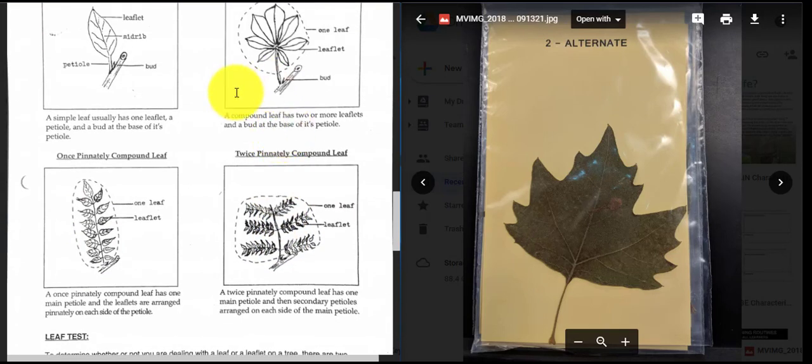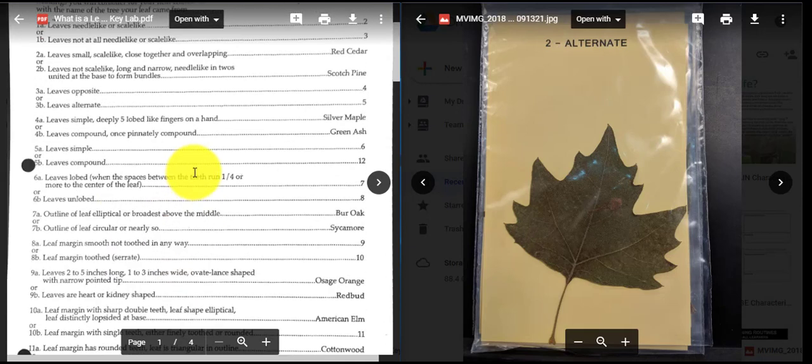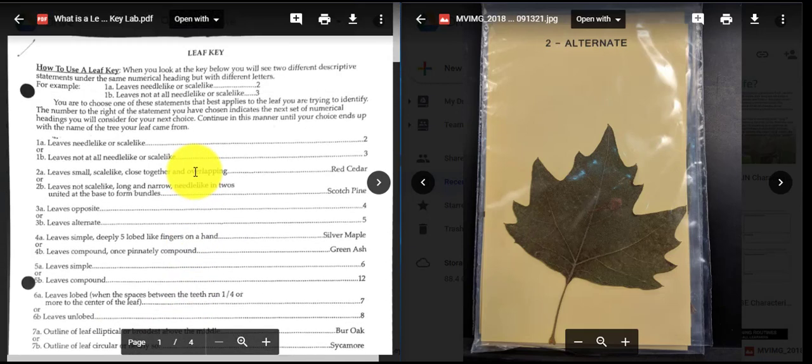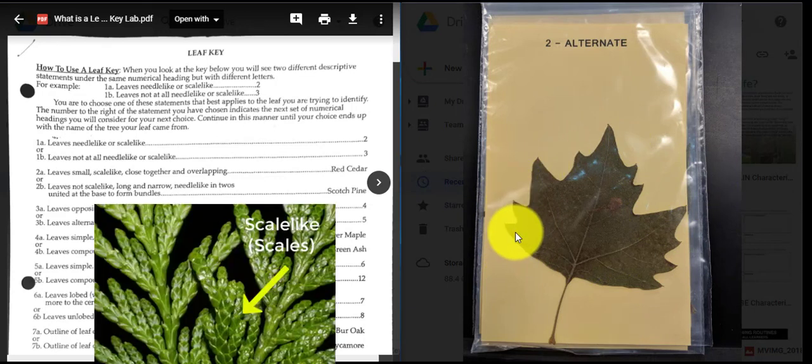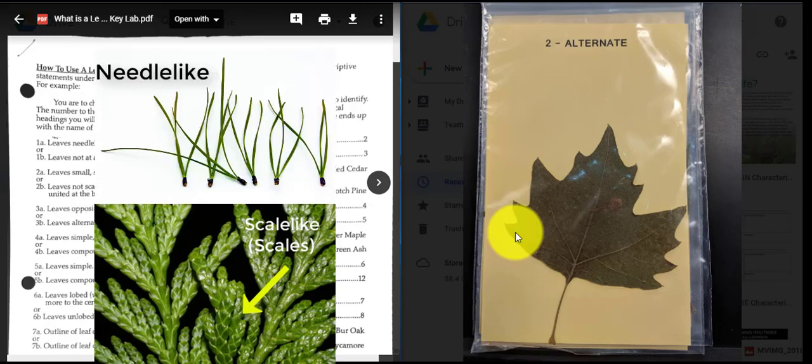All right, so those are important characteristics to remember when they come up in the dichotomous key. So let's do this one together. All right, so we're going to start at, as always, couplet number one. The leaves here are needle-like or scale-like, or they're not at all needle-like or scale-like. So what that means is, does this leaf look like a needle, or is it scaly? Well, this leaf is definitely not scaly, because a scaly leaf looks like this. And it's definitely not needle-like, because remember, needle-like leaves, if you always want to remember what a needle-like leaf looks like, think about the pine needles on your Christmas tree.